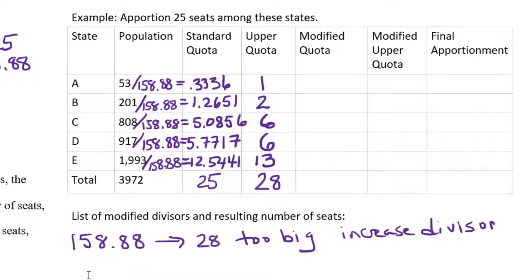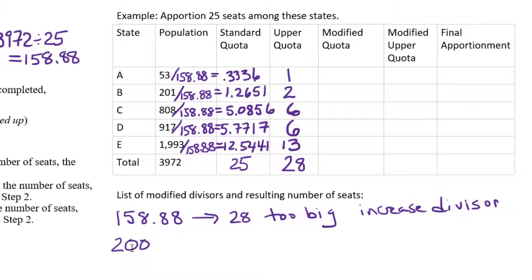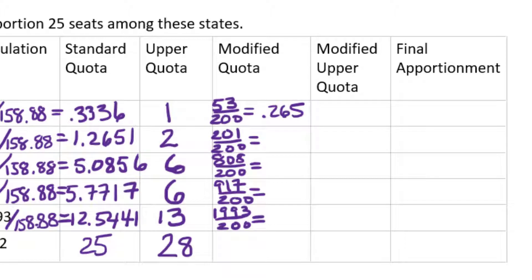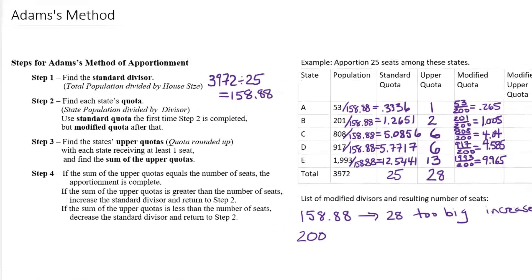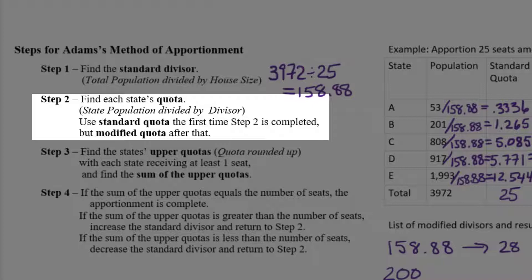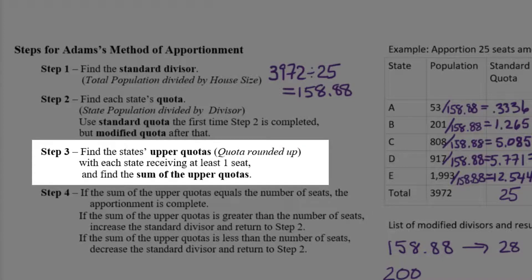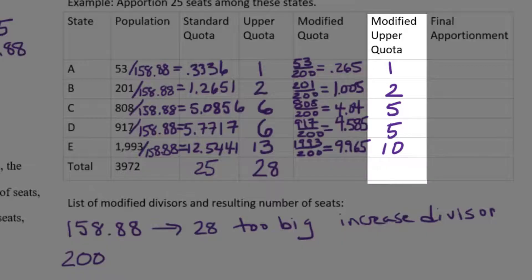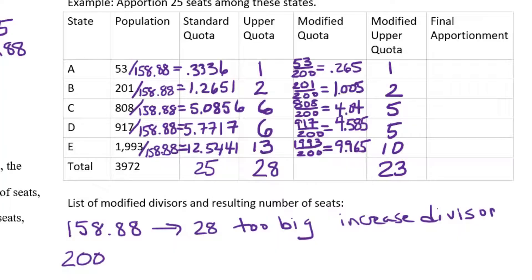I might try dividing all of these state populations by 200 instead of 158.88. So 53 divided by 200 is going to give me 0.265. 201 divided by 200 is 1.005, and so on. So I have completed my second round of step two, dividing by the divisor, this time a modified divisor. And now I'm moving on to step three, I'm going to list the upper quotas again. So that's going to be 1 and 2 and 5 and 5 and 10. Now if I add up my modified upper quotas, I get 1 and 2 is 3 and 5 is 8 and 5 is 13 and 10 is 23, which unfortunately is too low. So I'm going to make a note of that. That was too low.